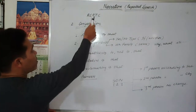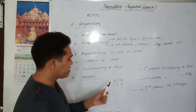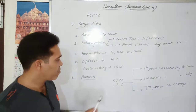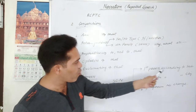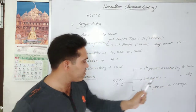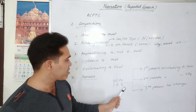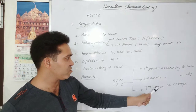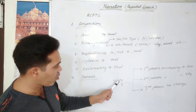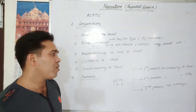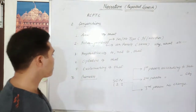P for pronoun. The rule is S, O, M — one, two, three. First person changes according to subject, second person changes according to object, and third person has no change. S stands for subject, O for object, and M for no change in pronouns.